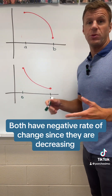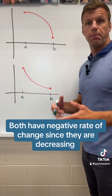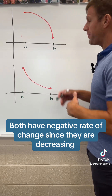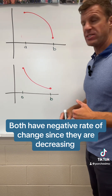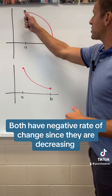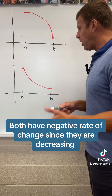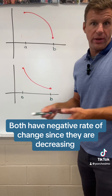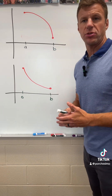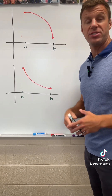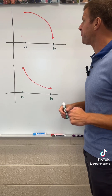In these two graphs, we see two graphs that are both decreasing. Both of them have negative rates of change. As we go from A to B, the outputs are going down — hence the graphs are decreasing. But again, it's how they're decreasing that makes them very different.